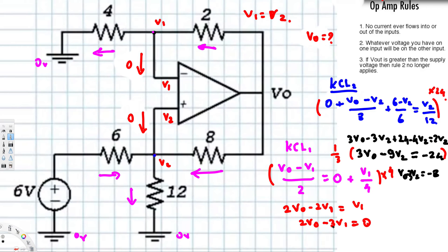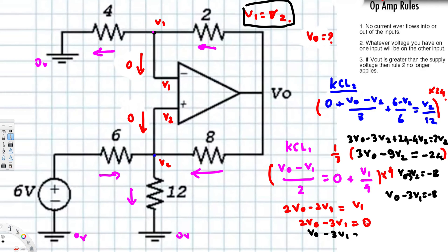We now have two equations: 2V-naught minus 3V1 equals 0, and V-naught minus 3V2 equals negative 8. Since V1 equals V2, we substitute to get V-naught minus 3V1 equals negative 8. Subtracting the second equation from the first, the V1 terms cancel, giving V-naught equals 8 volts.